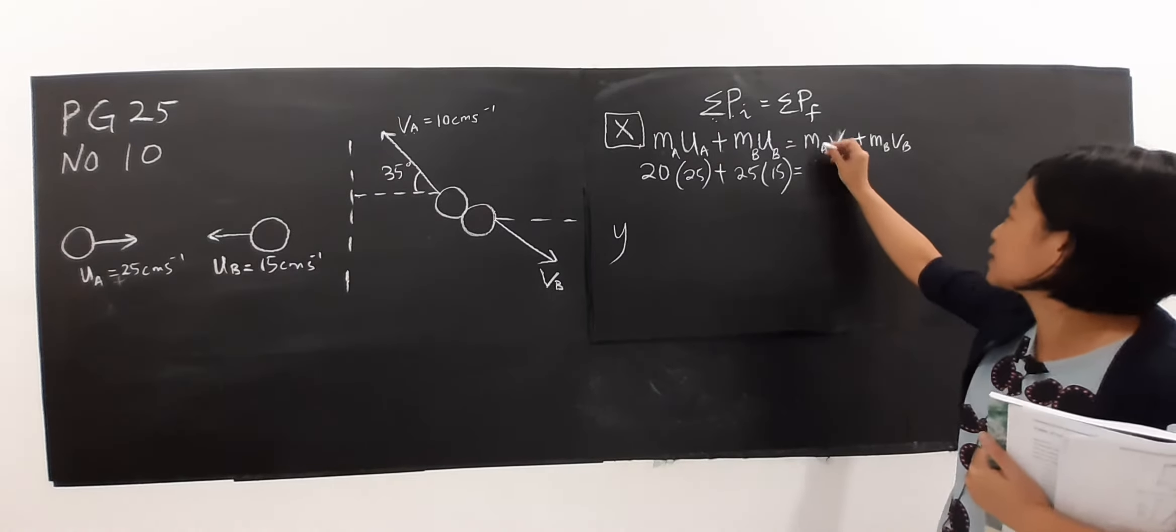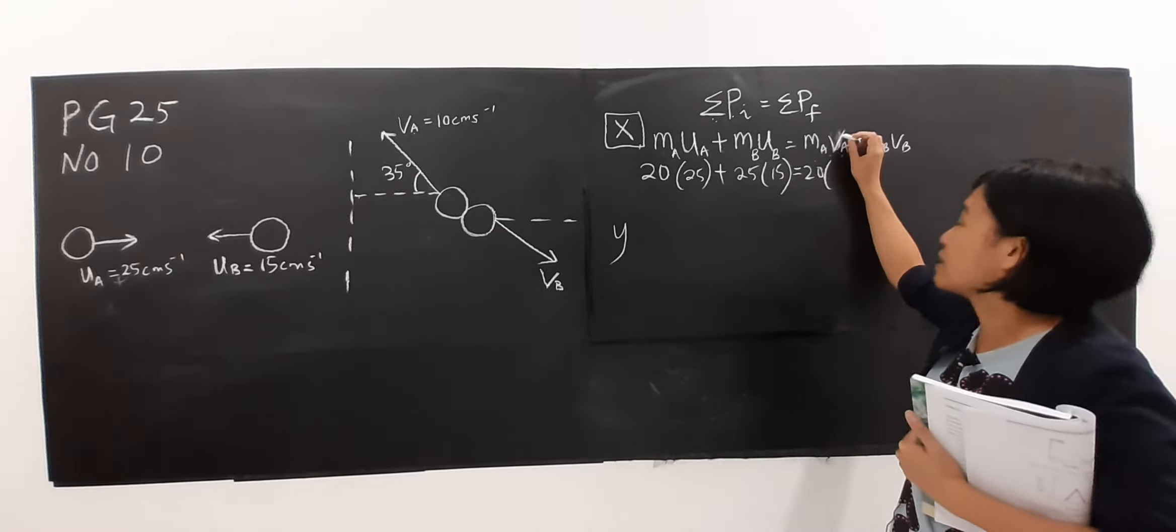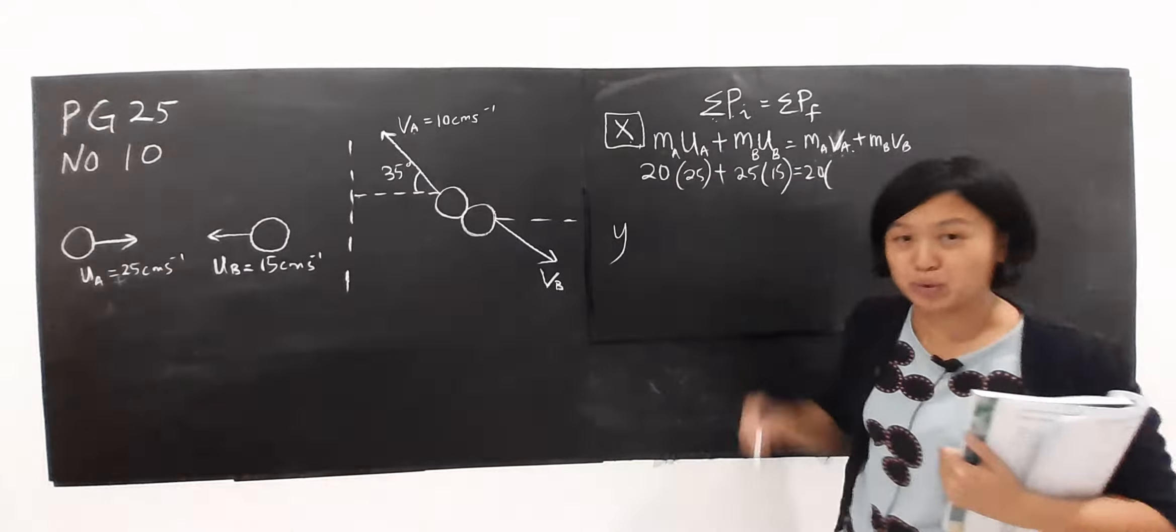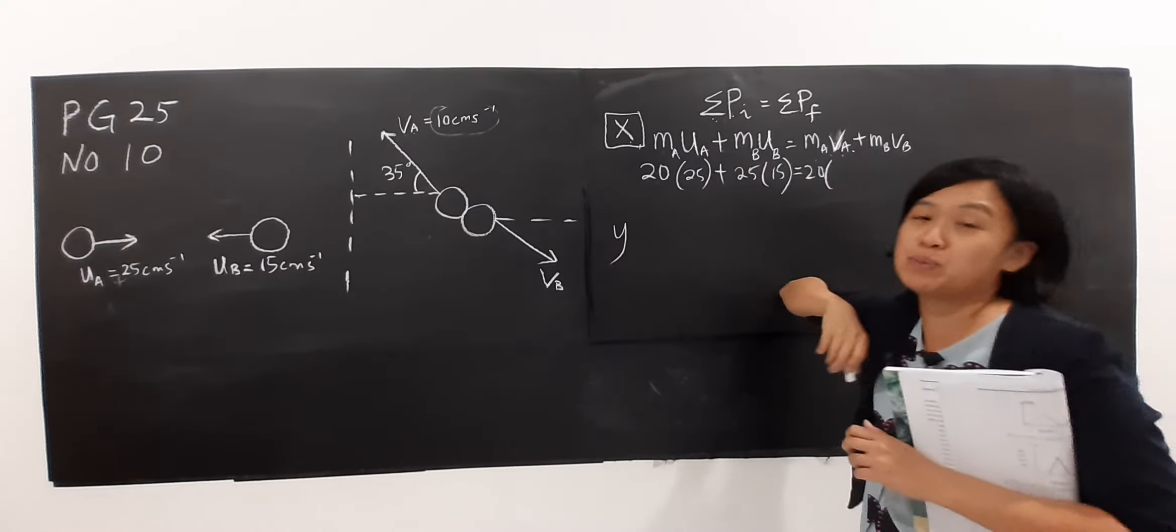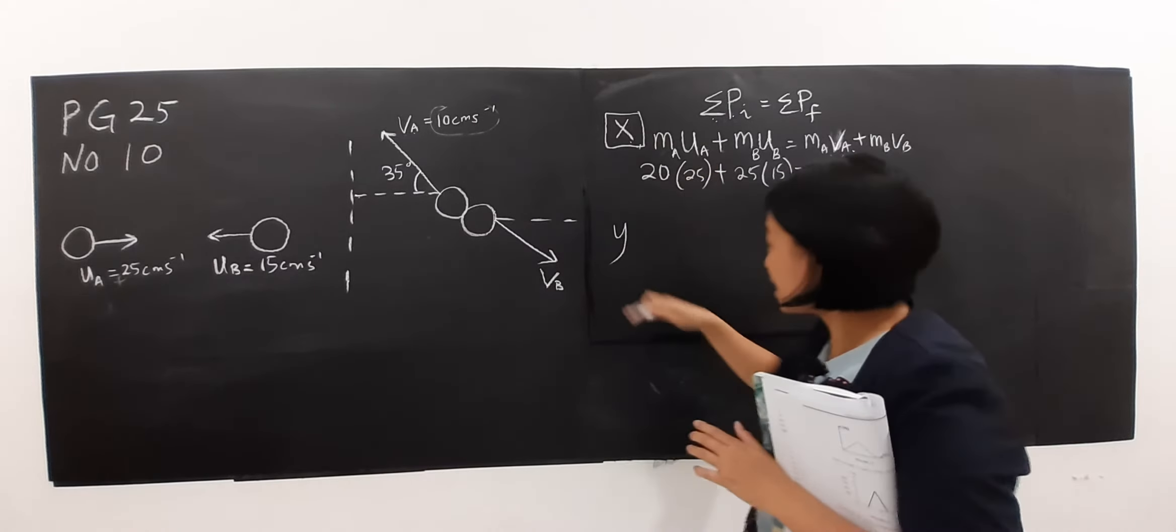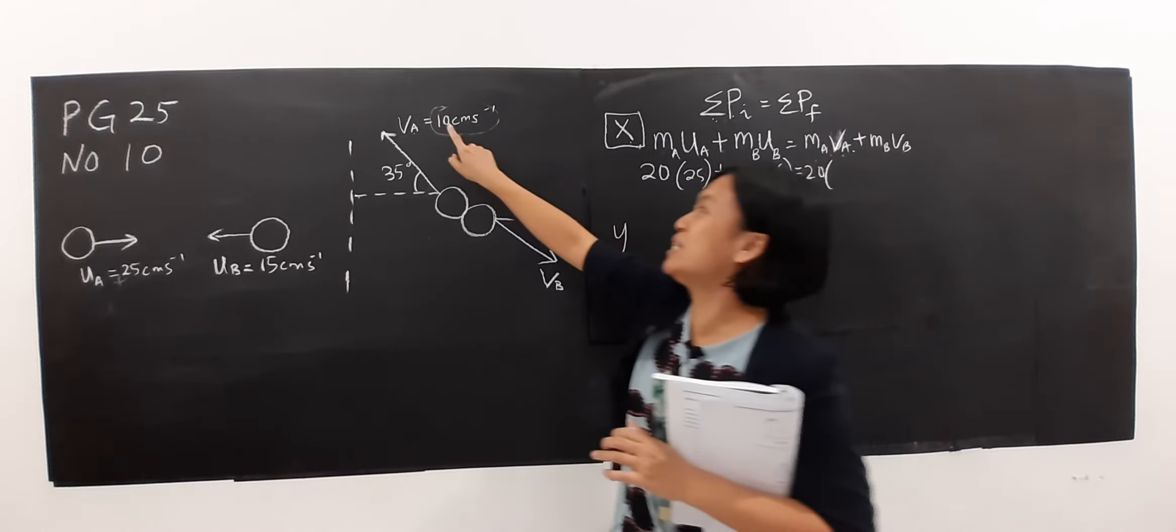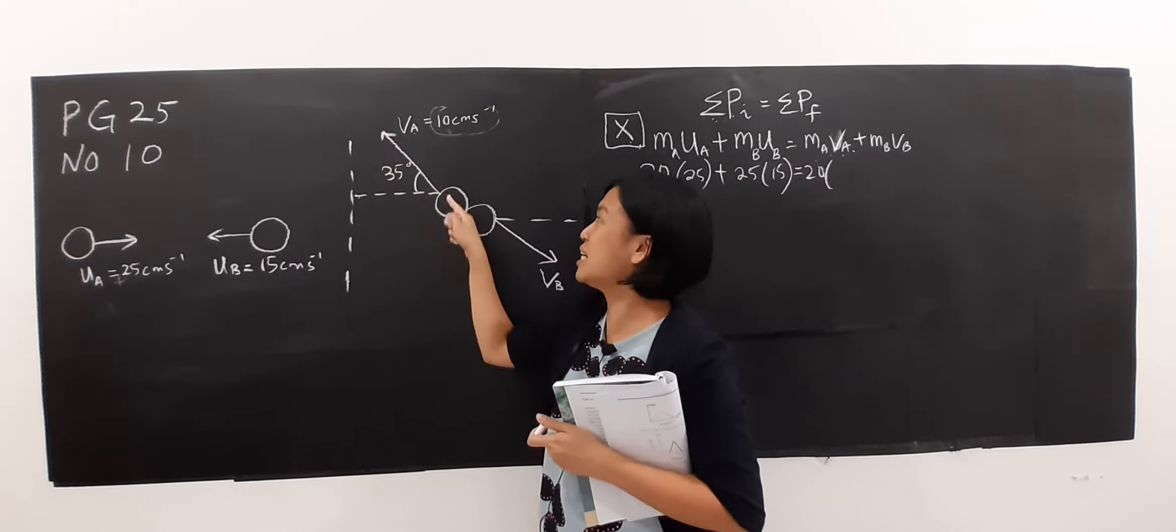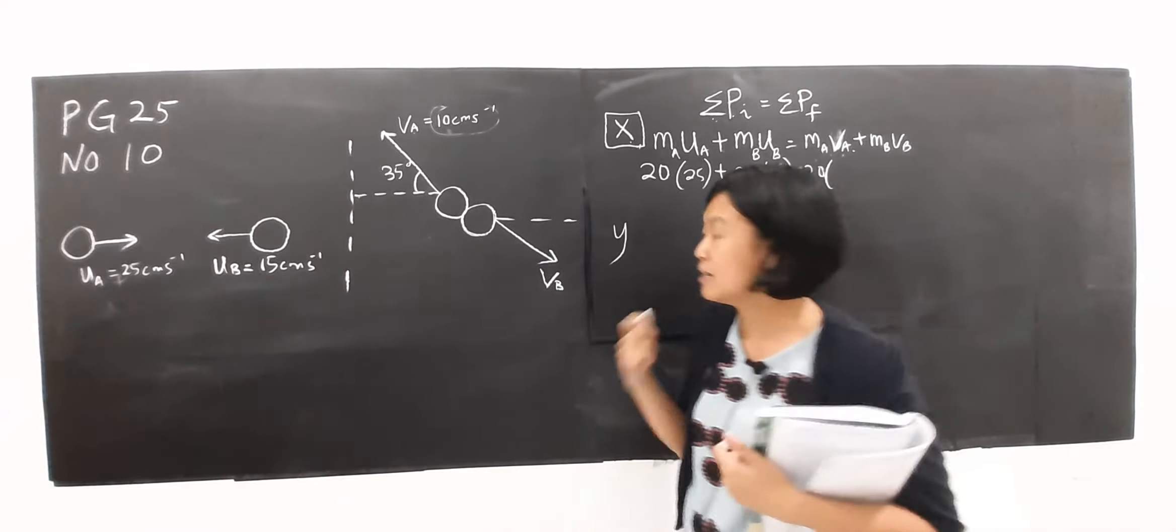Ball A goes to the right so I put positive sign for it, 25, plus MB which goes to the left. I have 25 times 15 equals MA which is 20. Now this is VAX, VA for x component.